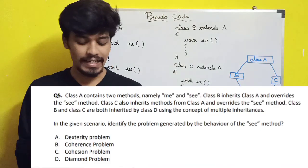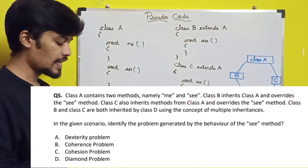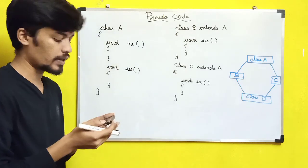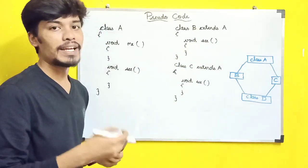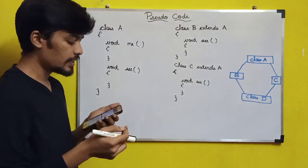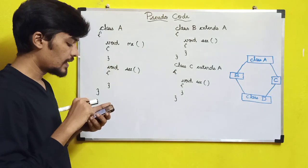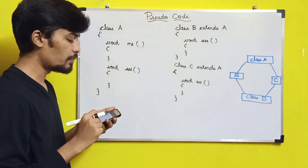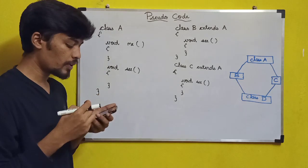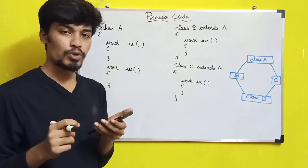Next question: Class A contains two methods, namely M and C. Class B inherits class A and overrides the C method. Class B and C are both inherited by class D using the concept of multiple inheritance. What problem will you generate with this same method? There are four options: dexterity problem, coherence problem, cohesion problem, diamond problem.